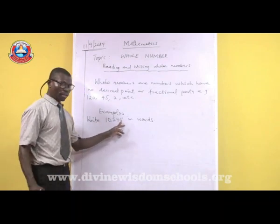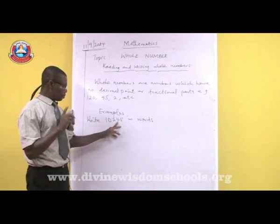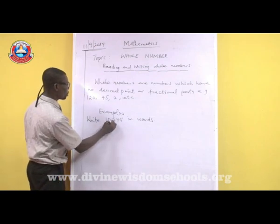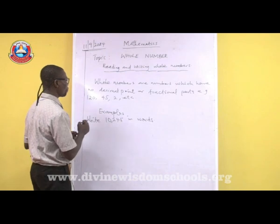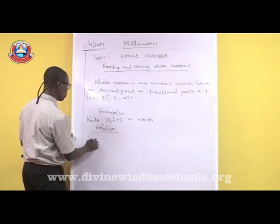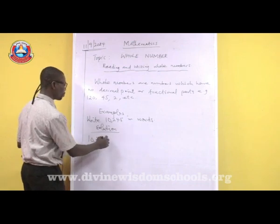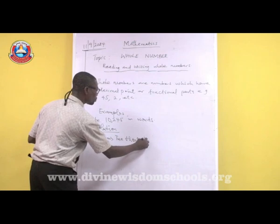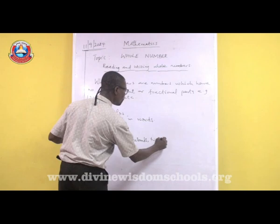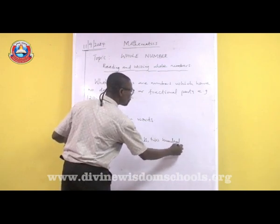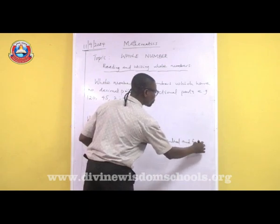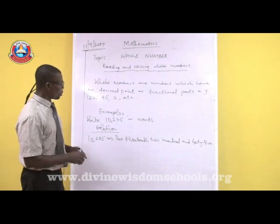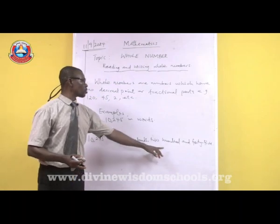Here, the 5 is units, 4 is tens, 2 is hundreds, 1 is thousands, and the leading 1 is tens of thousands. So this number is in the tens of thousands. Writing 10245 in words: ten thousand, two hundred and forty-five.